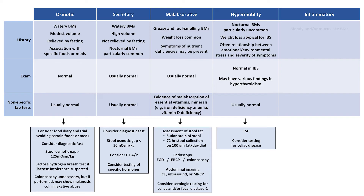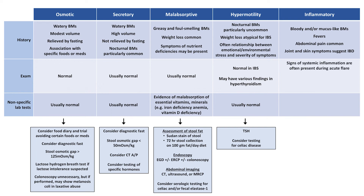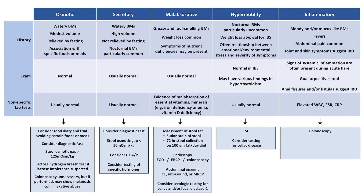In inflammatory diarrhea, the stool is bloody or mixed with mucus, and abdominal pain is common. In patients specifically with IBD, joint and skin symptoms are also common. Patients often have signs of systemic inflammation such as fever and tachycardia. The stool is usually guaiac positive, and anal fissures or fistulas specifically suggest IBD over infectious etiologies. Labs often show leukocytosis and an elevated ESR and or CRP. The primary diagnostic test is colonoscopy, though its timing may be risky during severe colitis. Fecal calprotectin has replaced fecal leukocytes as a non-invasive test to confirm inflammation. Consider testing for C. diff, particularly if the patient has been recently hospitalized or received antibiotics.